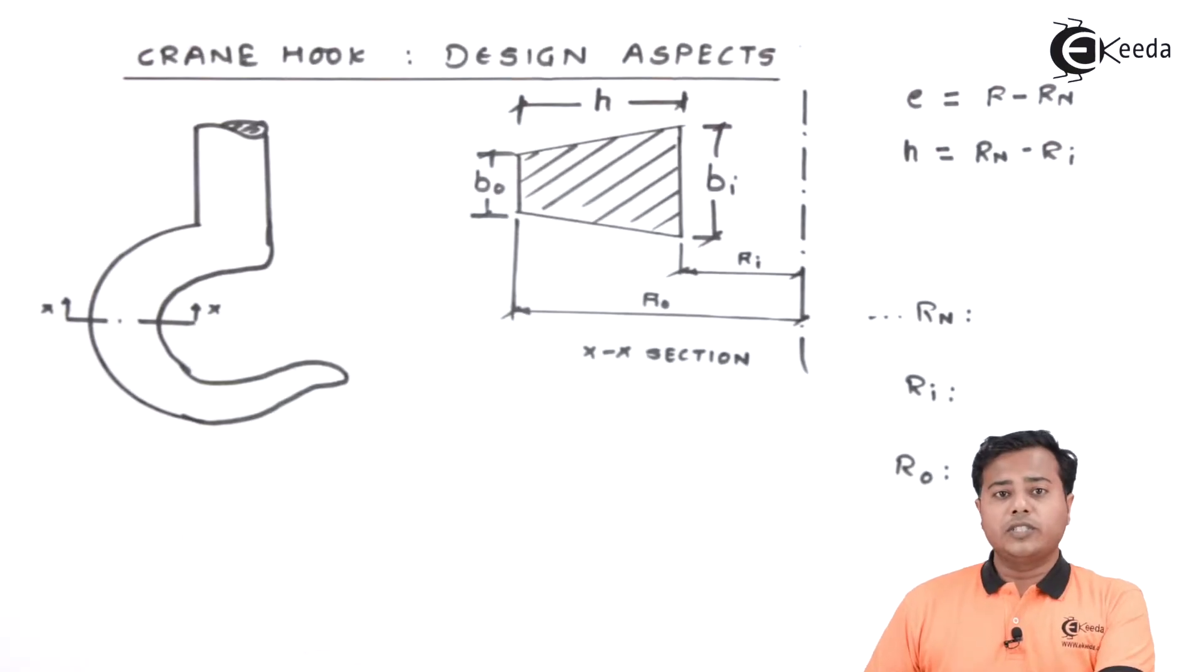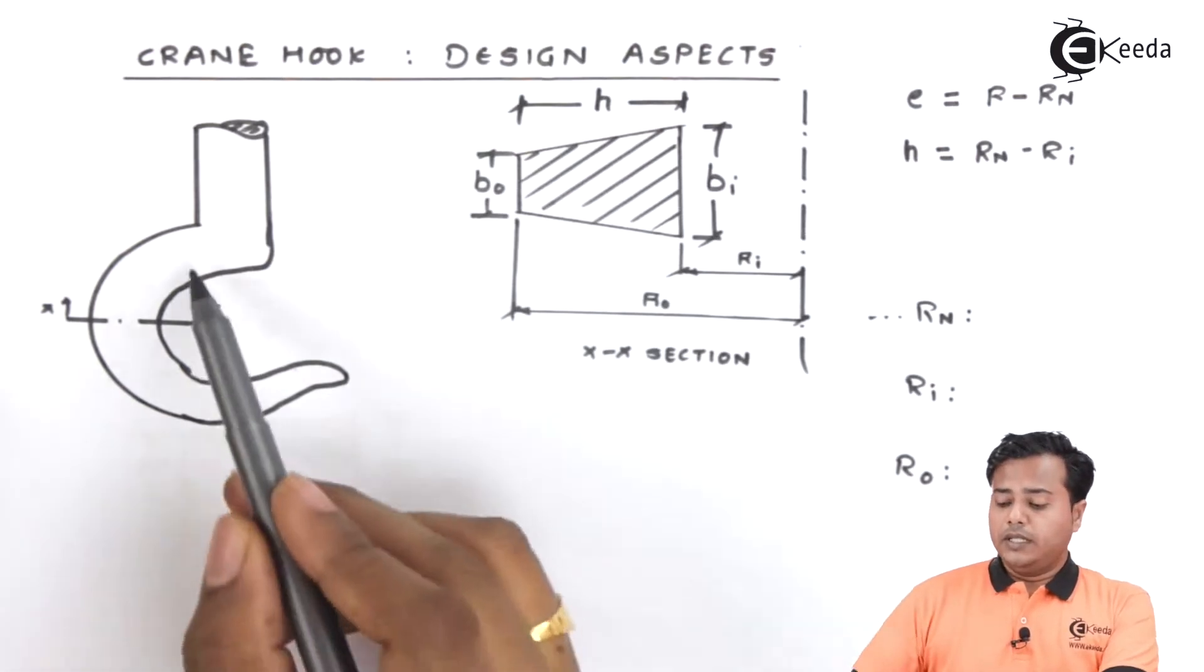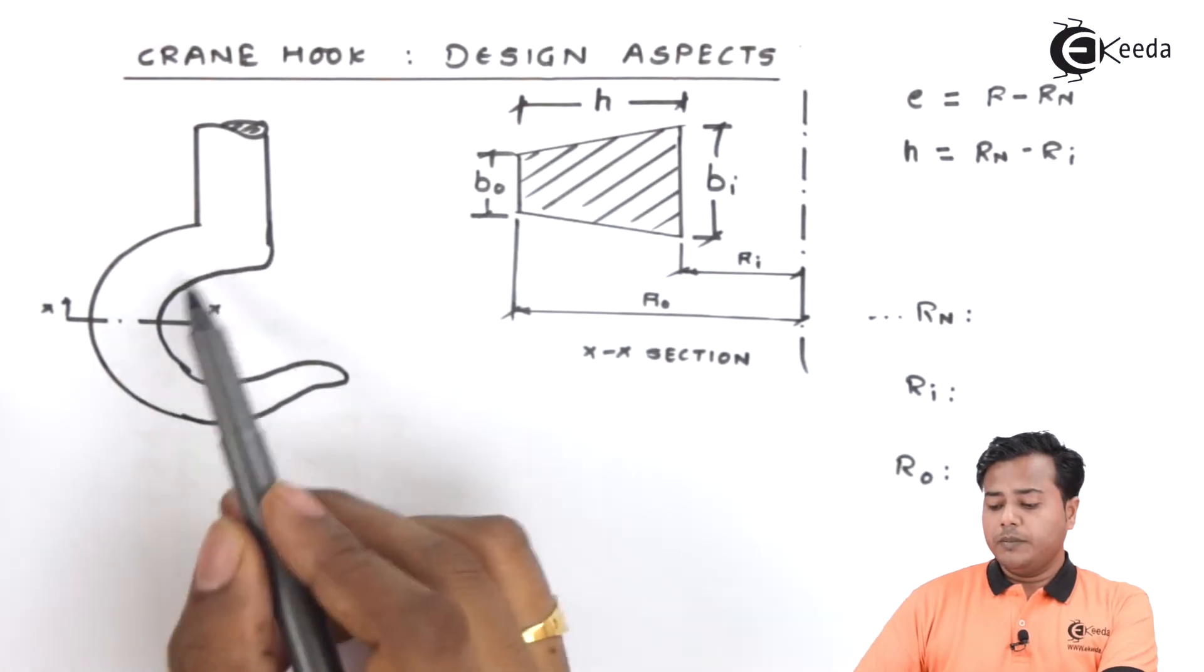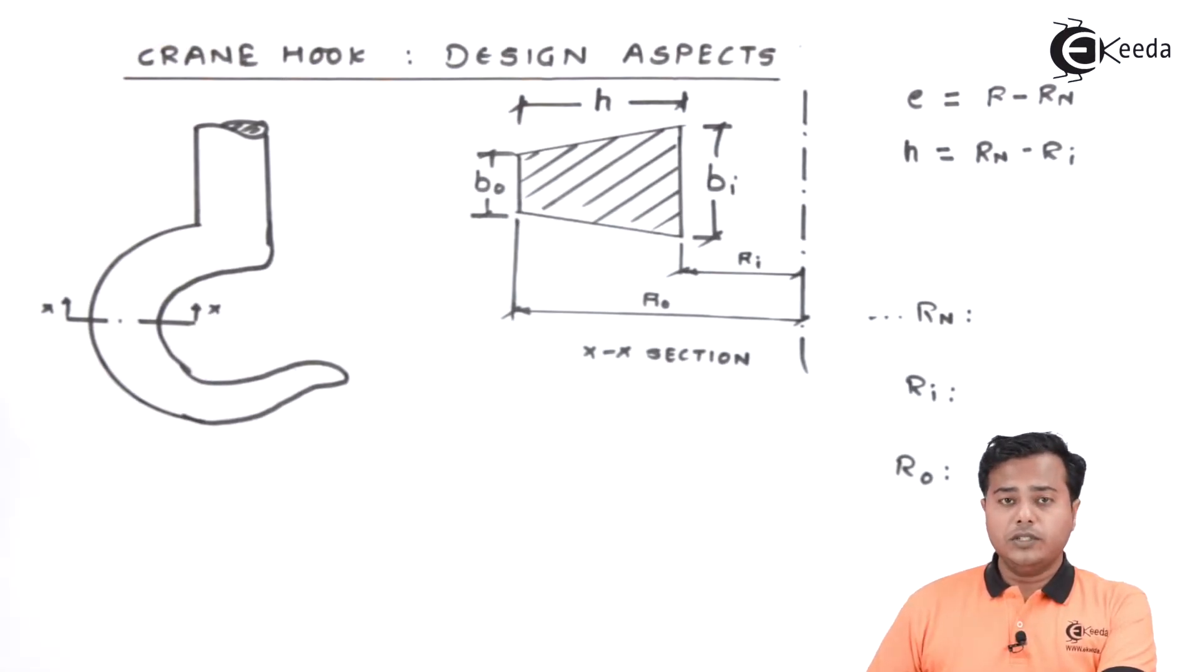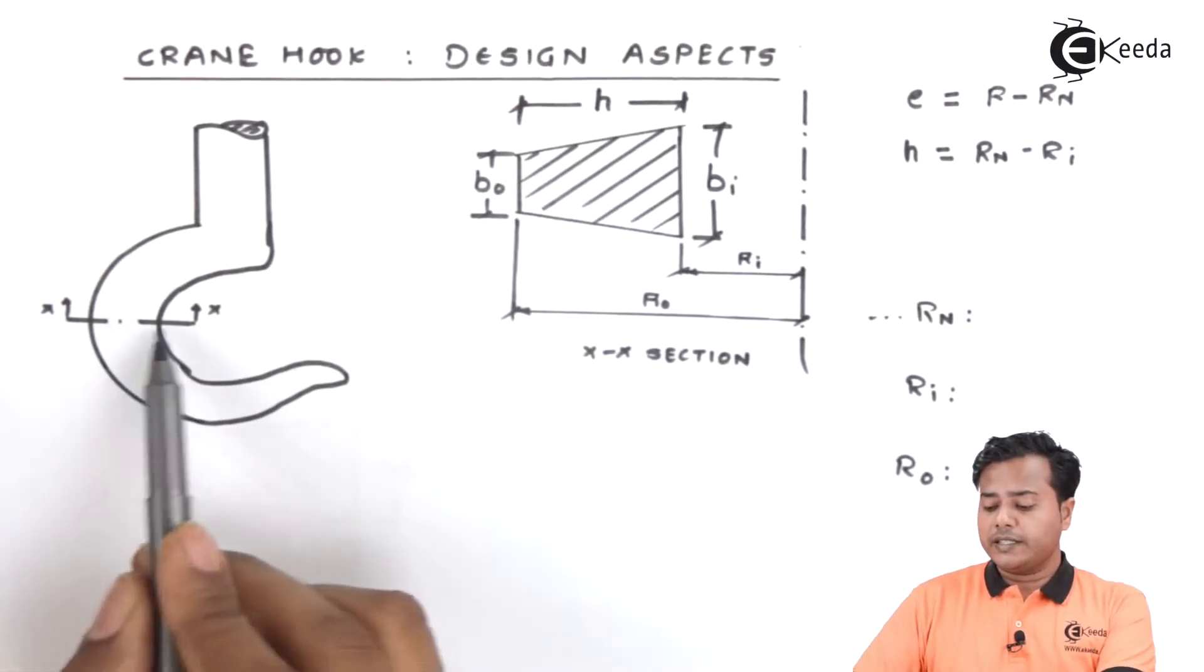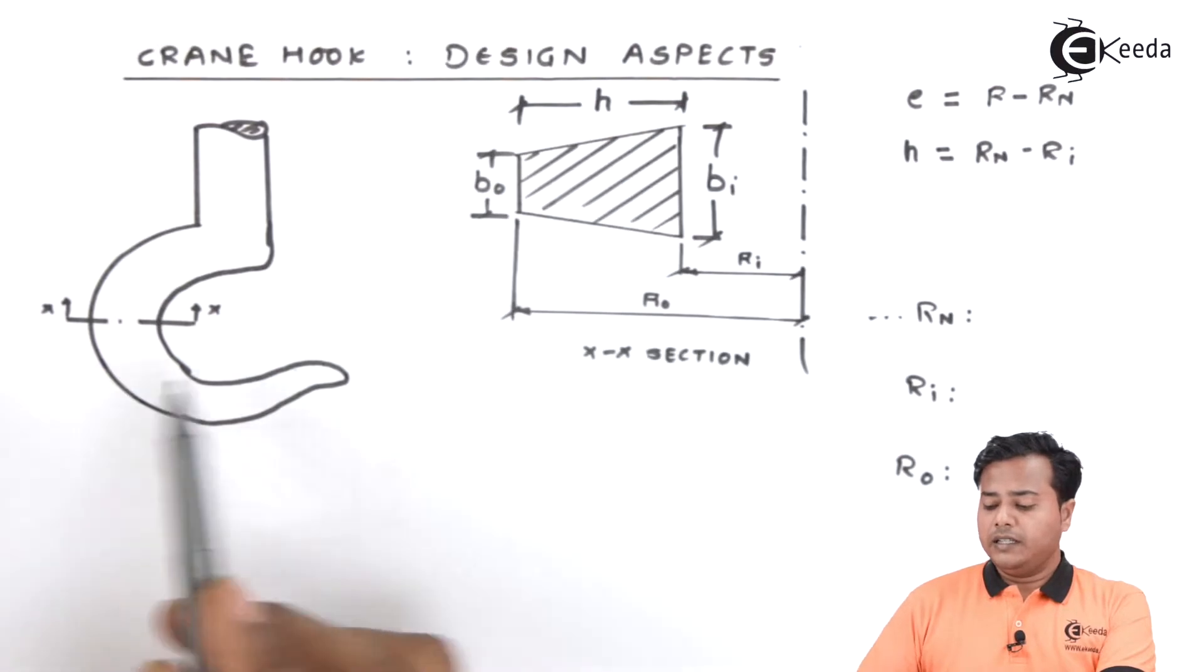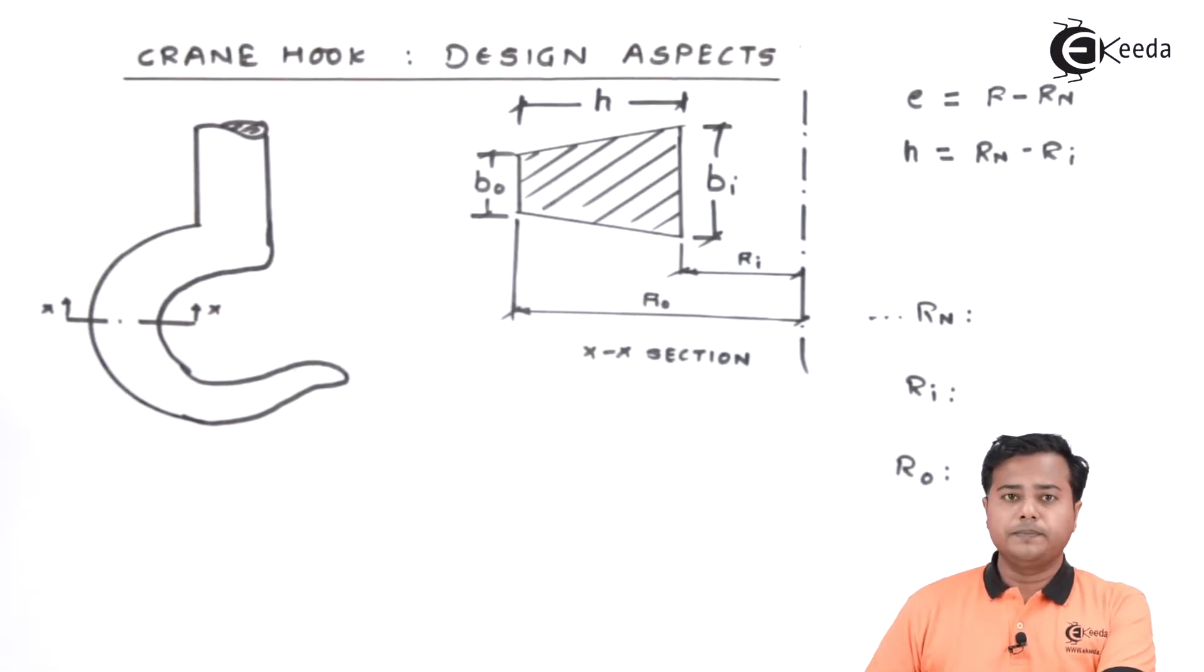Students, you can see on the screen a kind of Crane Hook is shown. The cross section of this hook may remain throughout constant or it may go on changing. For certain cross section design has to be done. Such a cross section XX we have considered and that cross section is shown in the figure.